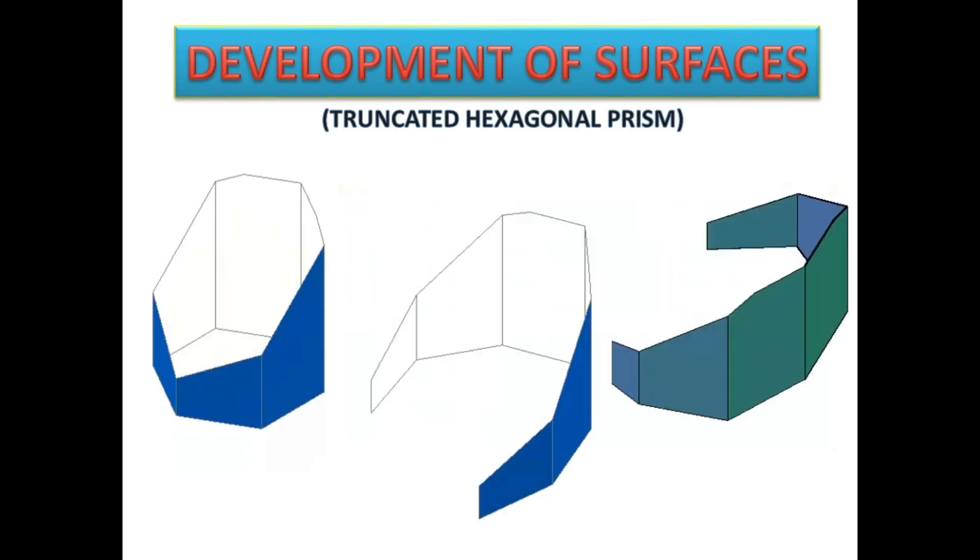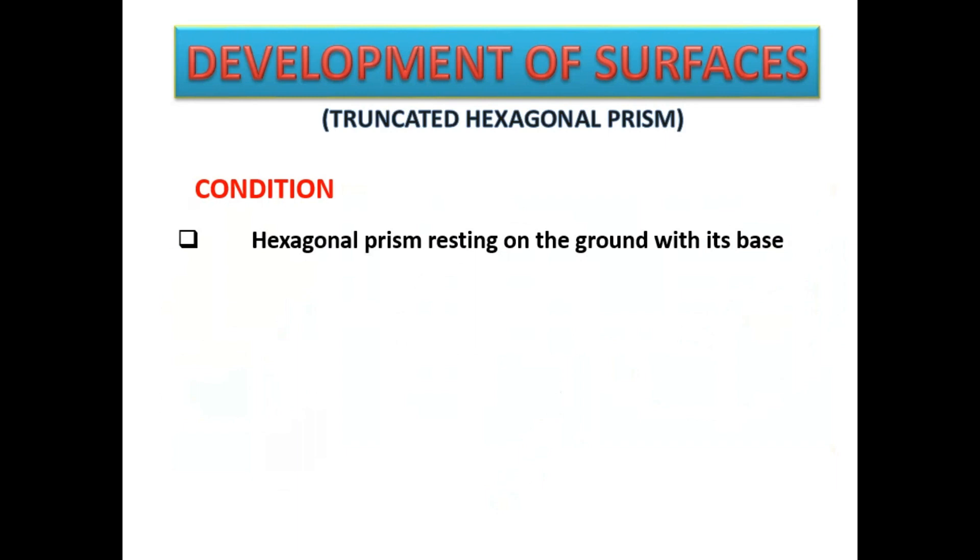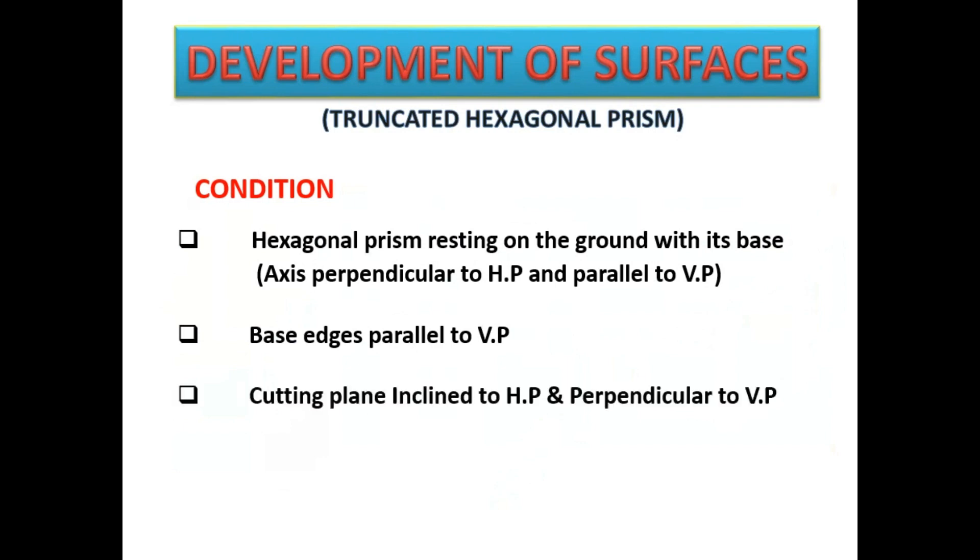Condition of the solid: Hexagonal prism is resting on the ground with its base. Axis of the prism is perpendicular to HP and parallel to VP. At the same time, the base edges are parallel to VP. Cutting plane is inclined to HP and perpendicular to VP.